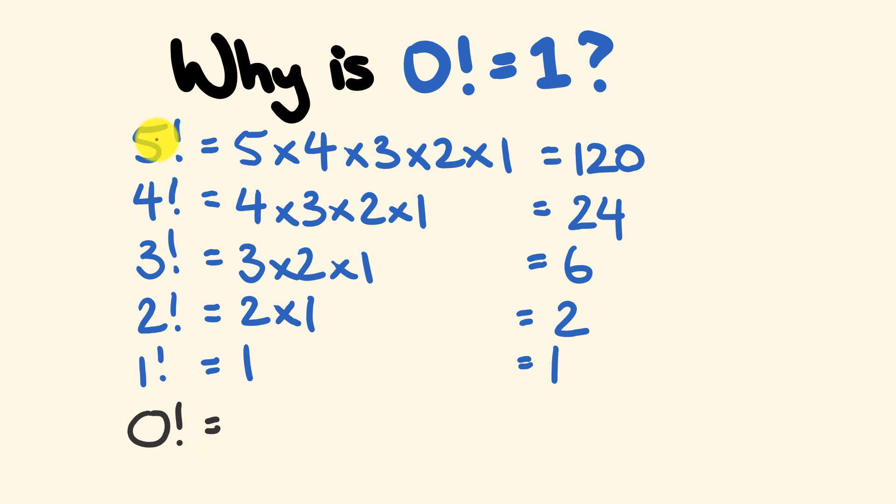So if we have a look first off at five factorial and compare that to four factorial, you can see the difference is that we have multiplied this one by five and down here we haven't. So as we go from 120 to 24, the answer of each of those factorials, we can see that what we do is divide by five.